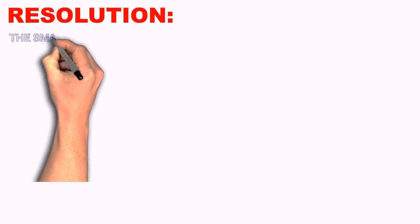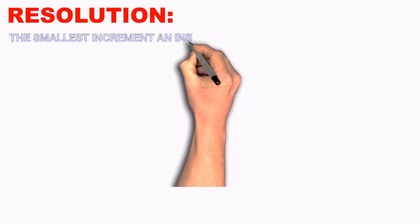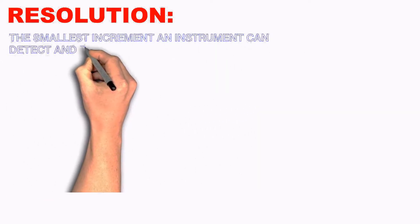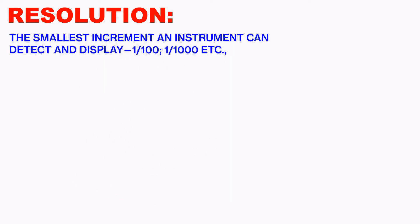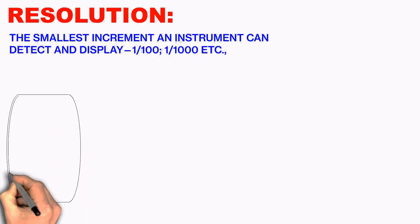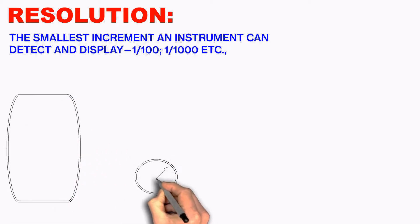So what's resolution? The smallest increment an instrument can detect and display in terms of hundreds or thousands or even millions. For example, let's take the same example, the same vessel. Now the pressure is 100 kPa and we are measuring at 99.99 kPa.